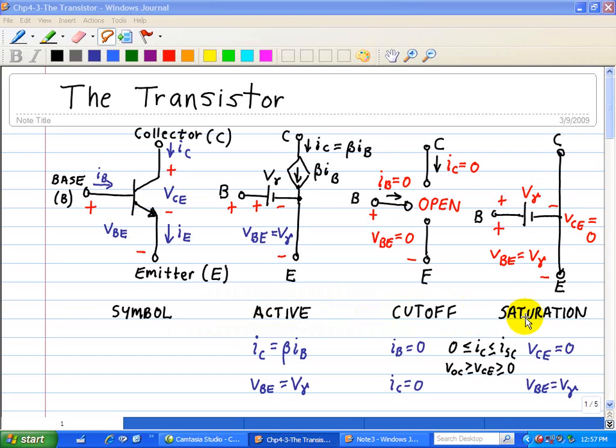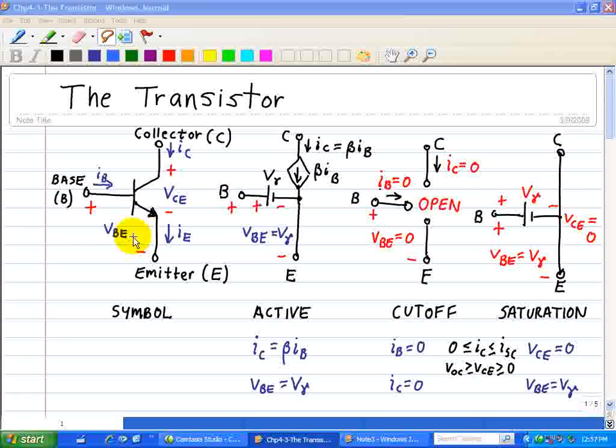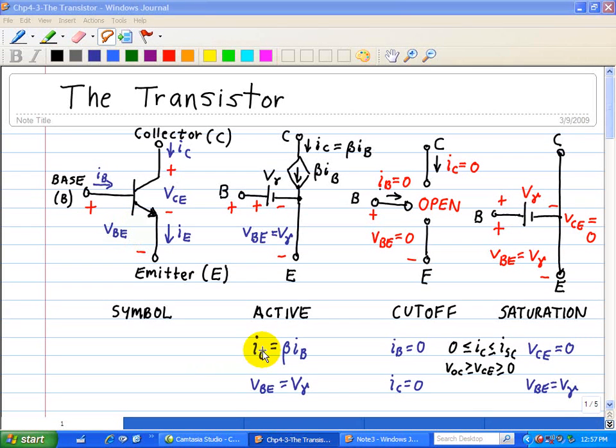In the active mode, the dominant feature of the BJT is that the collector current is controlled by the base current, as well as VBE which is constant. In other words, the active mode requires that IC is equal to beta times IB, and that VBE is equal to Vgamma, which is our threshold voltage in order for this transistor to conduct.